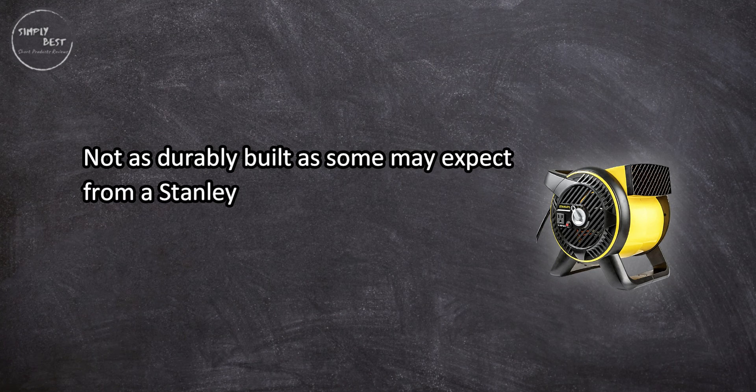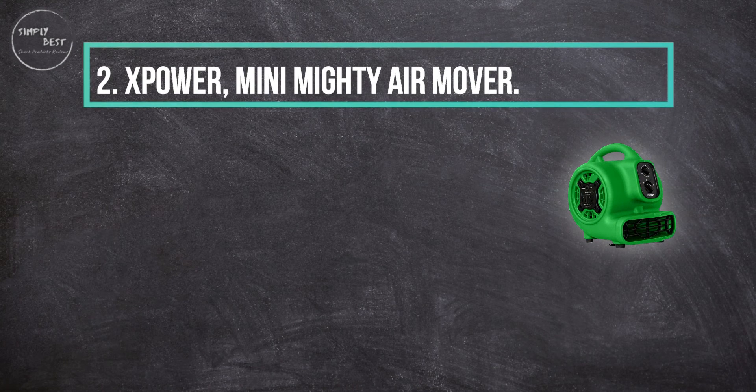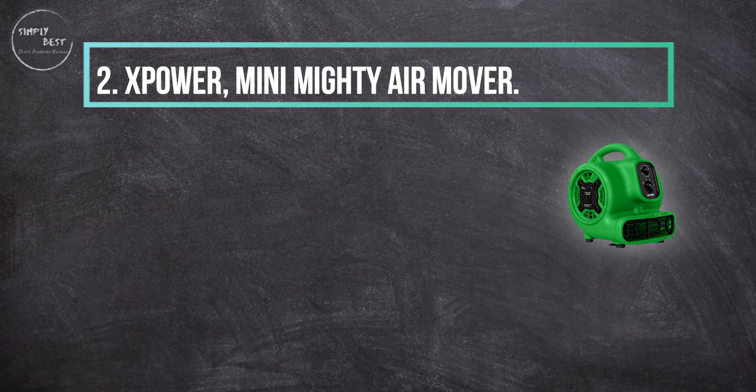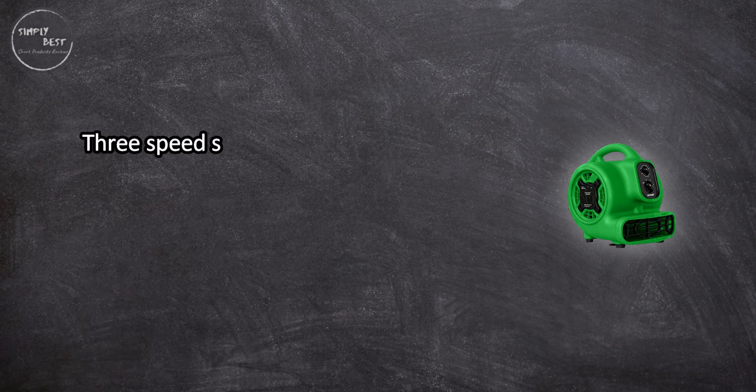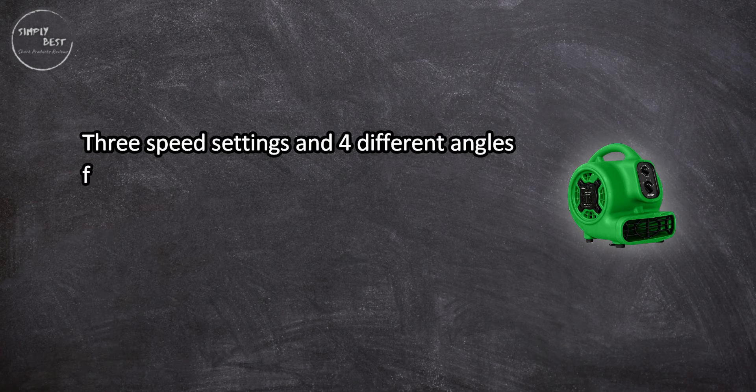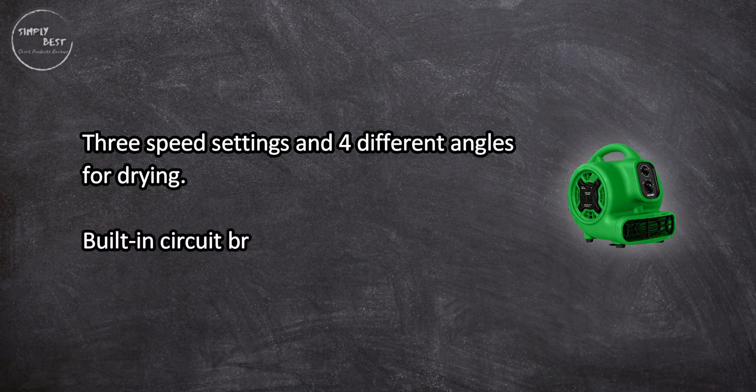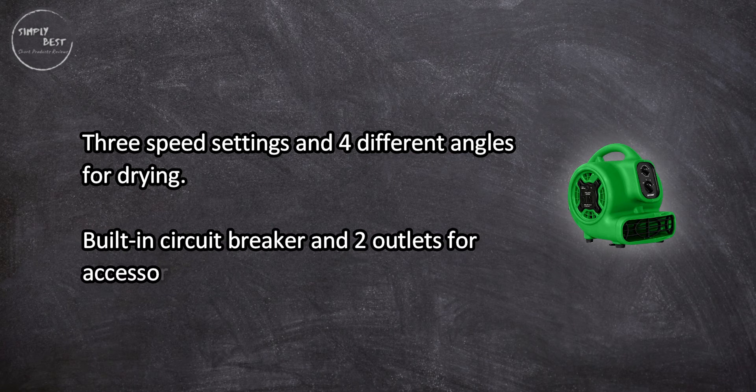At number two, X Power Mini Mighty Air Mover. Three speed settings and four different angles for drying. Built-in circuit breaker and two outlets for accessories.